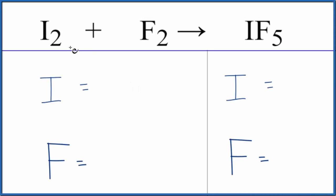In this video, we'll balance the equation for I2 plus F2 gives us IF5. We have iodine gas plus fluorine gas gives us iodine pentafluoride.